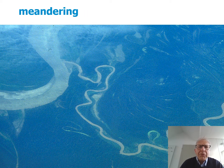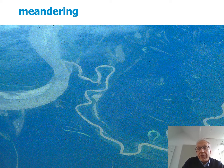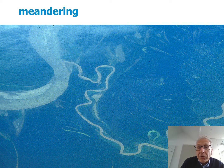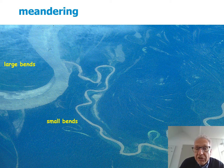All these processes of erosion, transport, and sedimentation give rise to shapes. On a large scale, a prominent shape is the bends that you can see from the air — meanders. There can be large bends, like in the upper left corner, or small bends related to the smaller river in the lower right part of the picture.